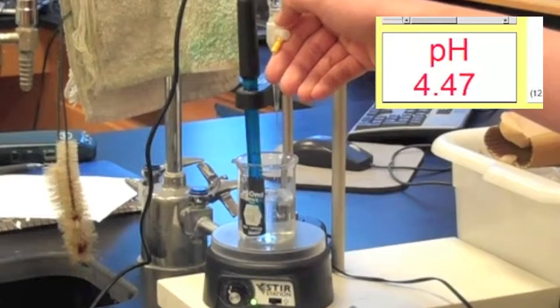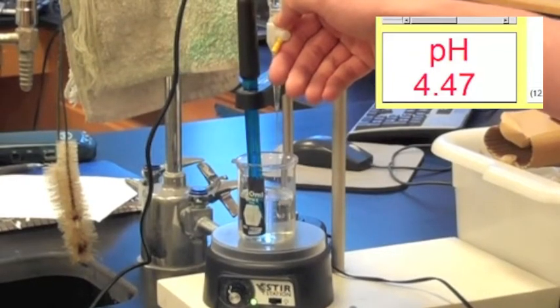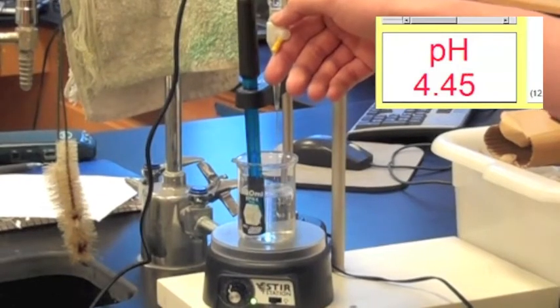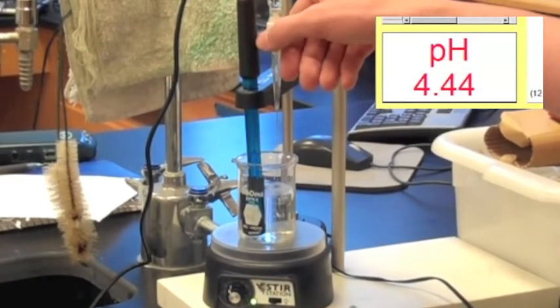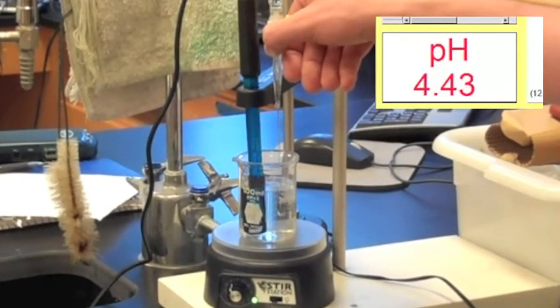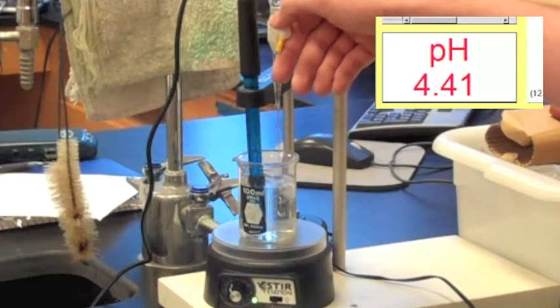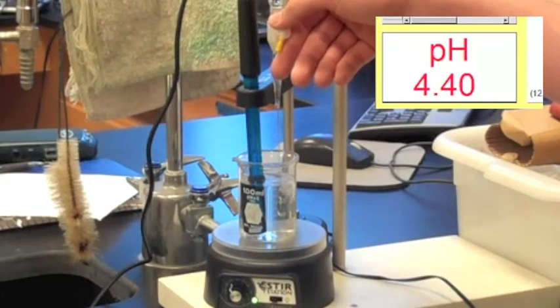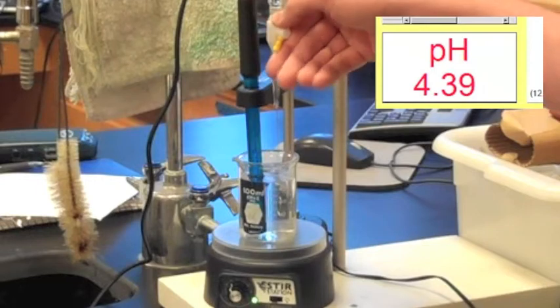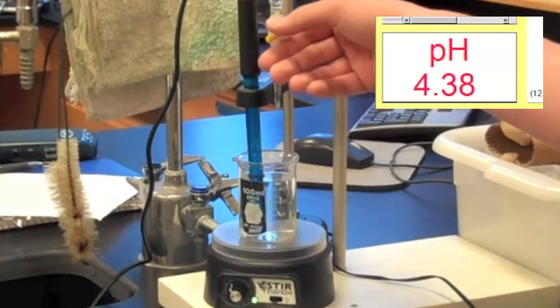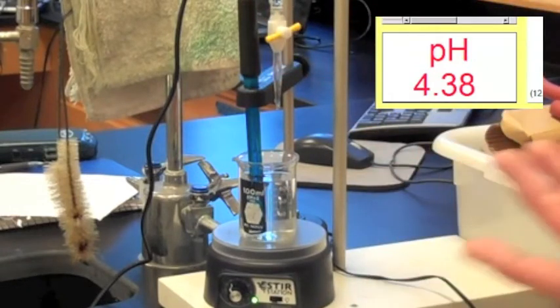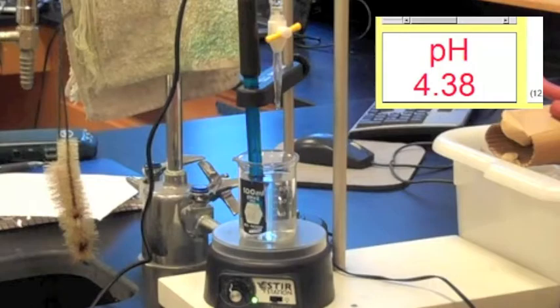Let's see if I can get the pH to change. It's starting to drop a little, but not drastically so. Now I've added about 35 milliliters or so. The pH is 4.4 now, which is only about 0.01 less than what we started with. So that's basically what a buffer does, and now I'm going to tell you how it works.